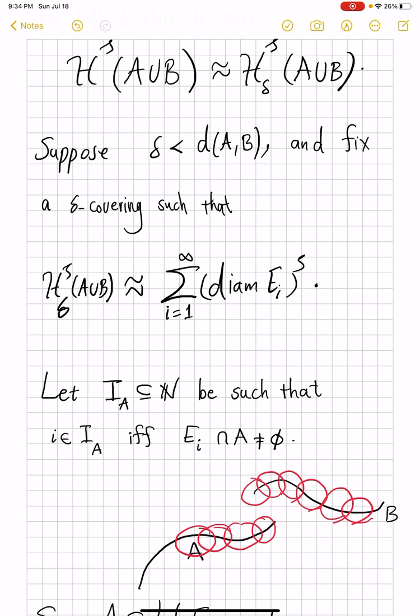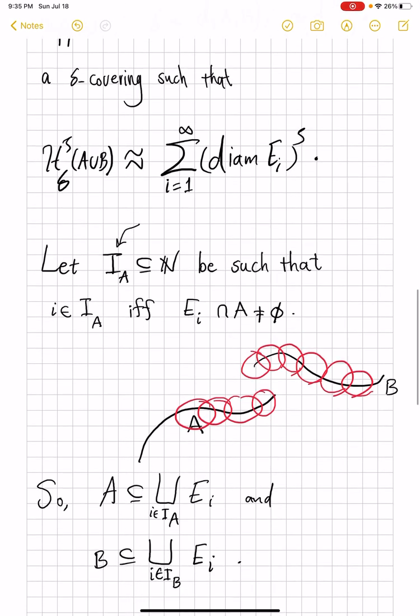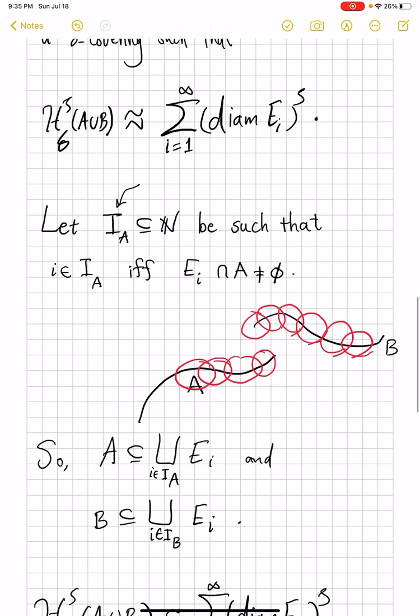And we can then divide up the index according to that. And I call this I_A the subset of natural numbers, those indices which help contribute to covering of A and the analogous terminology and notation for I_B. So A will be covered by those E_i's where i belongs to I_A. And these, of course, are still δ-coverings of individual sets.